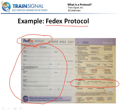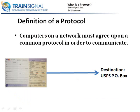Now, there are a number of these protocols out there, just as there are a number of companies you could use to send a letter. Well, it works the same way with computers — there are a number of different protocols on a computer network. But one thing you have to keep in mind: computers on a network must agree upon a common protocol in order to communicate. For example, if we're trying to send a letter using FedEx but the destination address is a USPS P.O. box, that by default is not allowed, because you're trying to send using the FedEx protocol and receive using the United States Postal Service protocol.